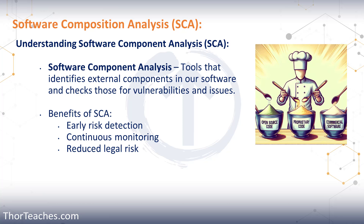SCA also looks at the dependencies and relationships with other components. By using those tools, developers and security teams get a detailed report for the application that flags any components that may pose a risk. And by doing that, we get early risk detection — we identify potential issues in the development process, which allows the team to remediate the risk before putting it into production.